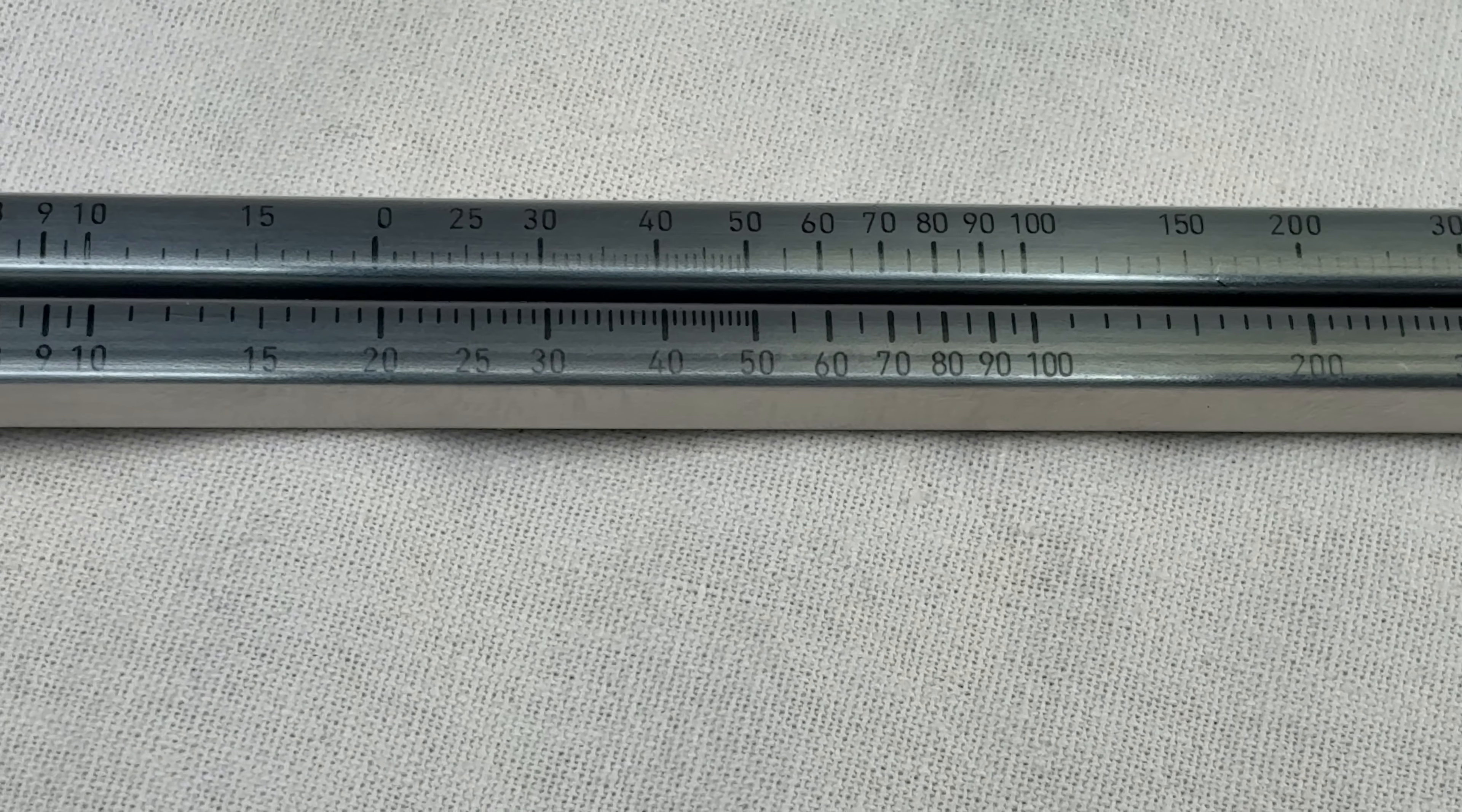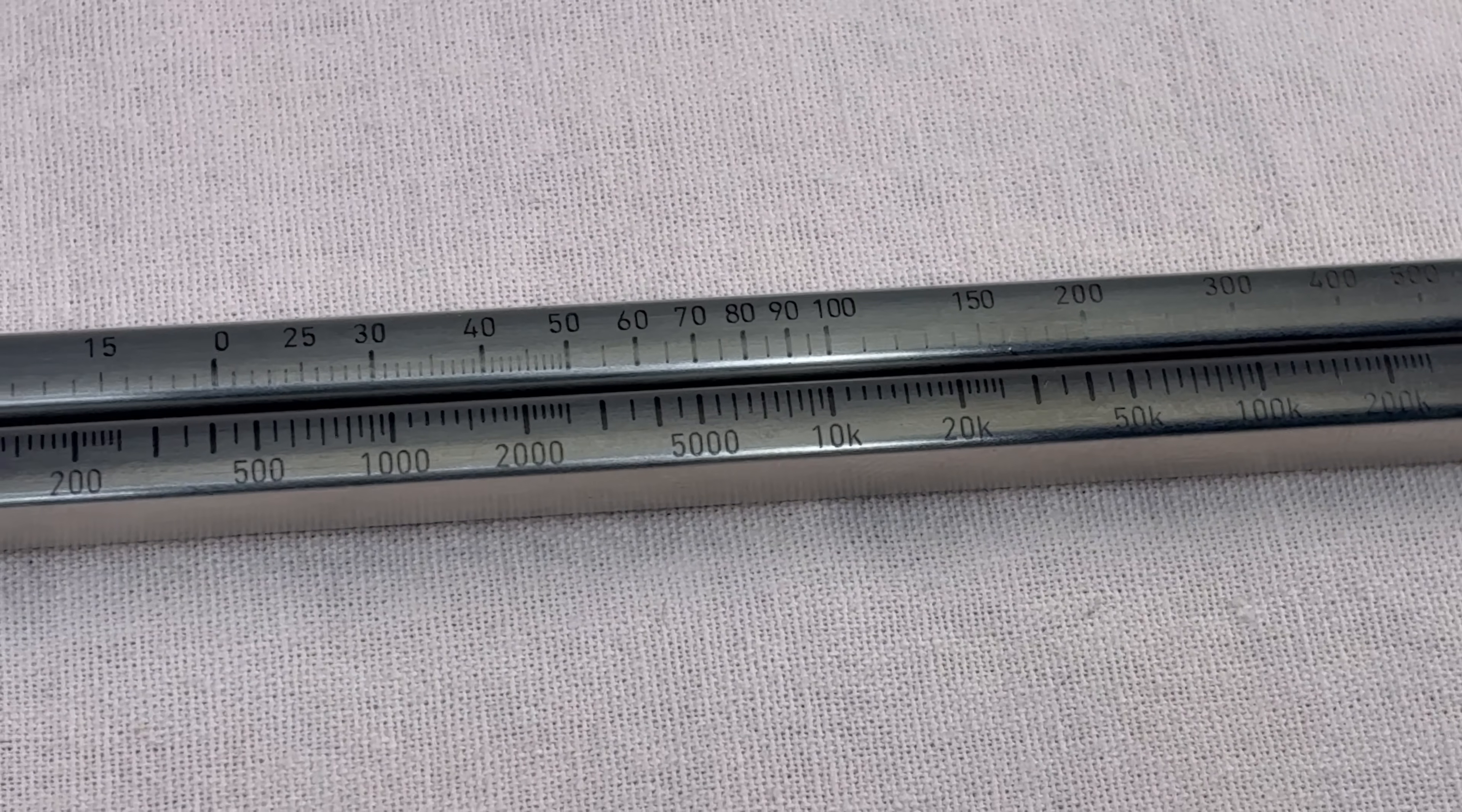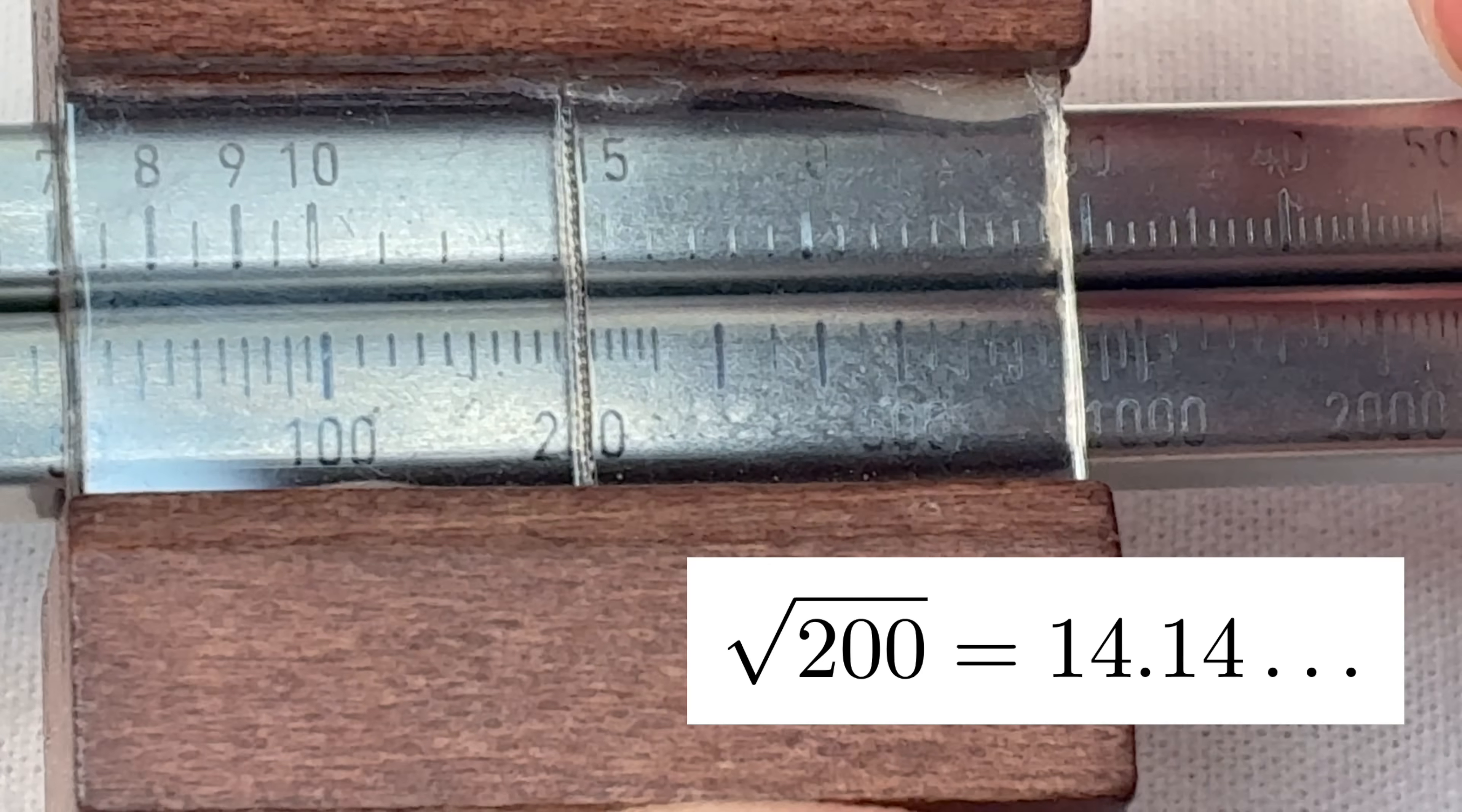The C and D scales are for multiplying and dividing. The A is for squares, either finding the square of something, or if you reverse the process you can get square roots. Like if you put the C next to the A, you see every mark on the A is the square of the same mark on the C. So if I want 12 squared, I find 12 on the C, look across to the A, it looks like a little less than 150. Or you can look back the other way to get a square root. Like look at 200 on the A, then it lines up with a little more than 14 on the C.